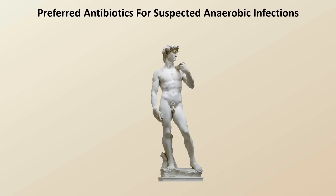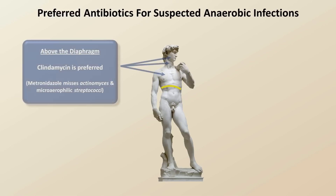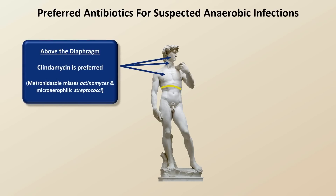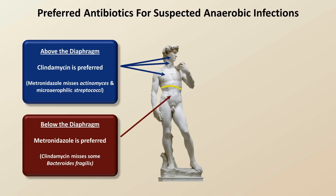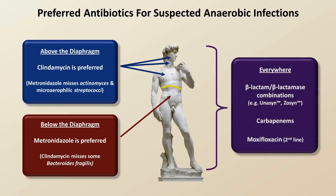So how does one choose an antibiotic in a suspected anaerobic infection? The basic principle is fairly simple. If we suspect an anaerobic infection above the diaphragm, clindamycin is preferred as metronidazole misses Actinomyces and microaerophilic streptococci. If we suspect an infection below the diaphragm, metronidazole is preferred because clindamycin misses some B. fragilis. If we need an antibiotic that covers both above and below, we would preferentially choose either a beta-lactam/beta-lactamase inhibitor combination or a carbapenem.